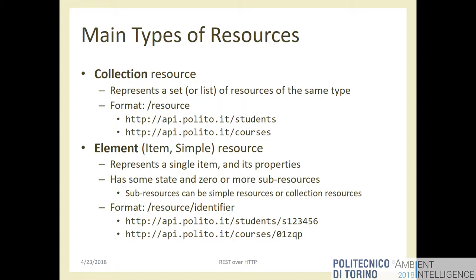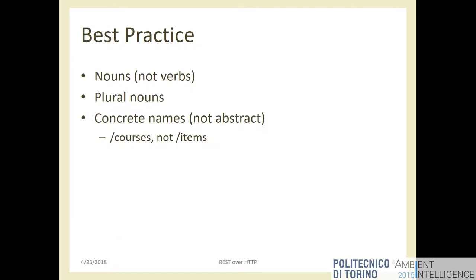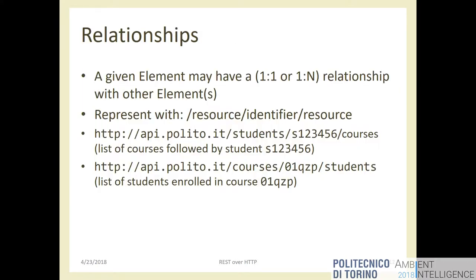We can model collections of items or individual items with this scheme. We can also model relationships between elements: for example, `/students/s12345/courses` is a collection of courses taken by this specific student — not the full list of courses, but restricted to this user. Conversely, `/courses/{courseId}/students` would be the list of students enrolled in that course.